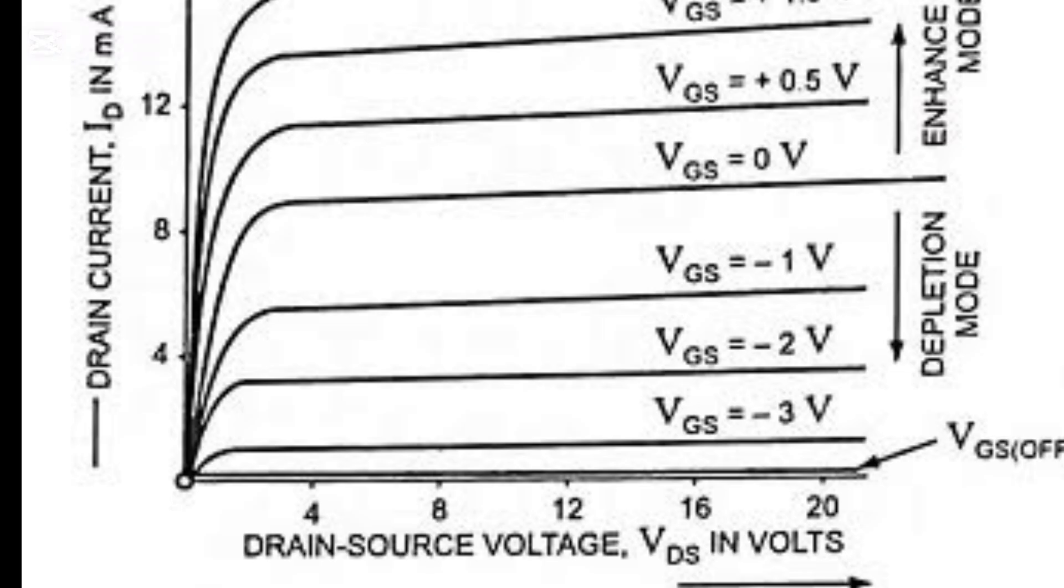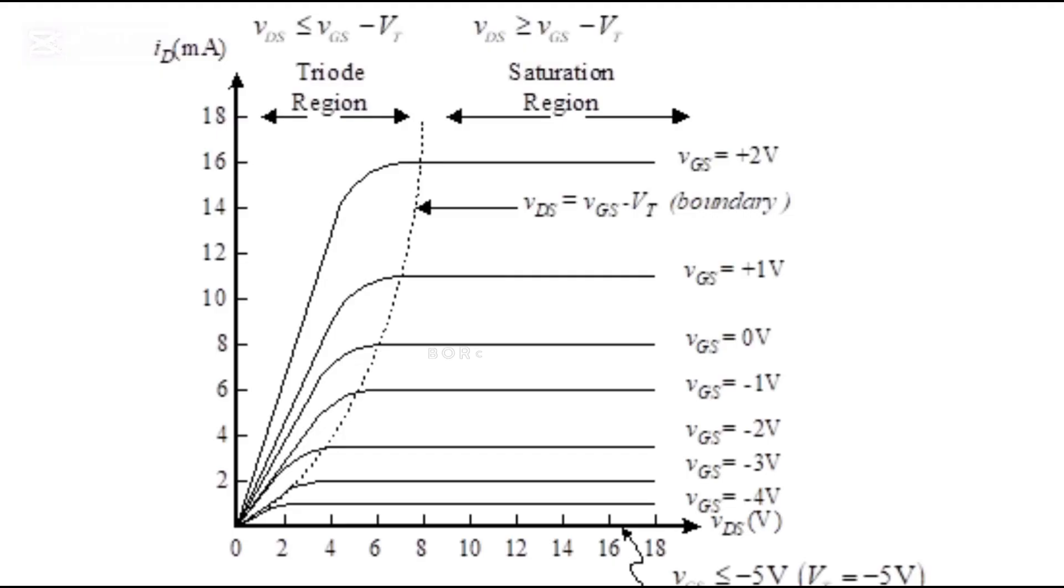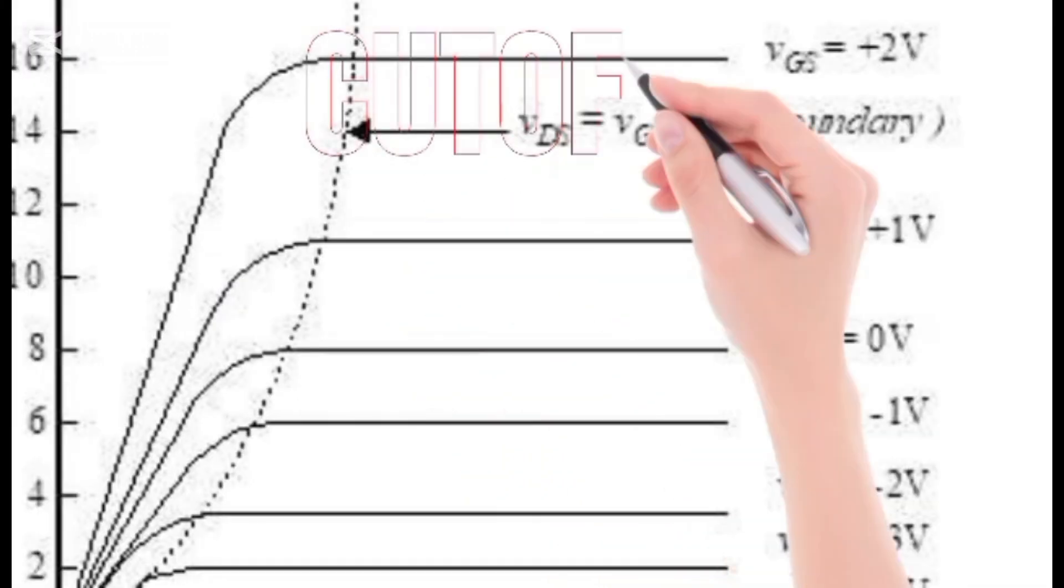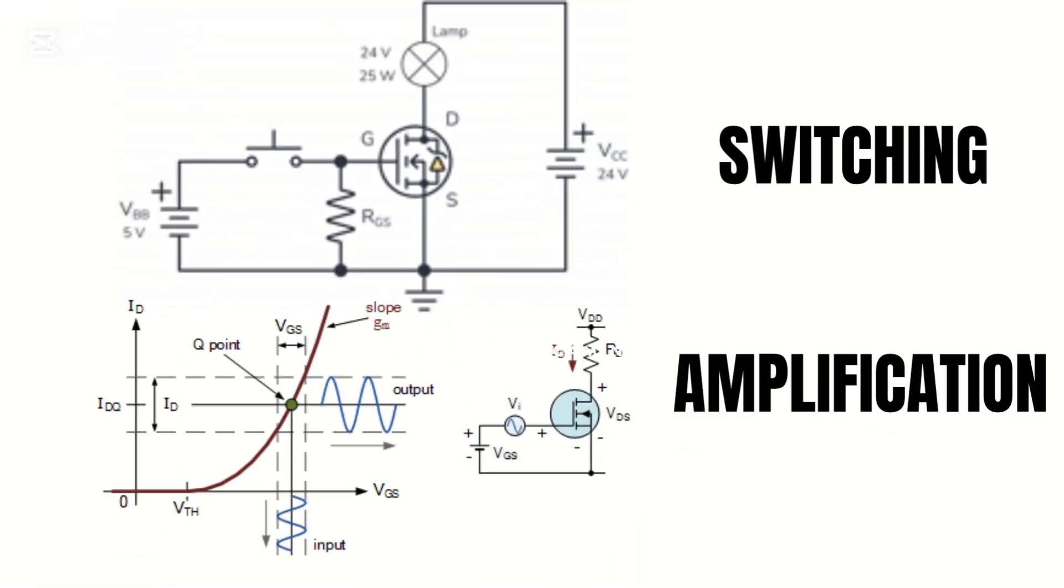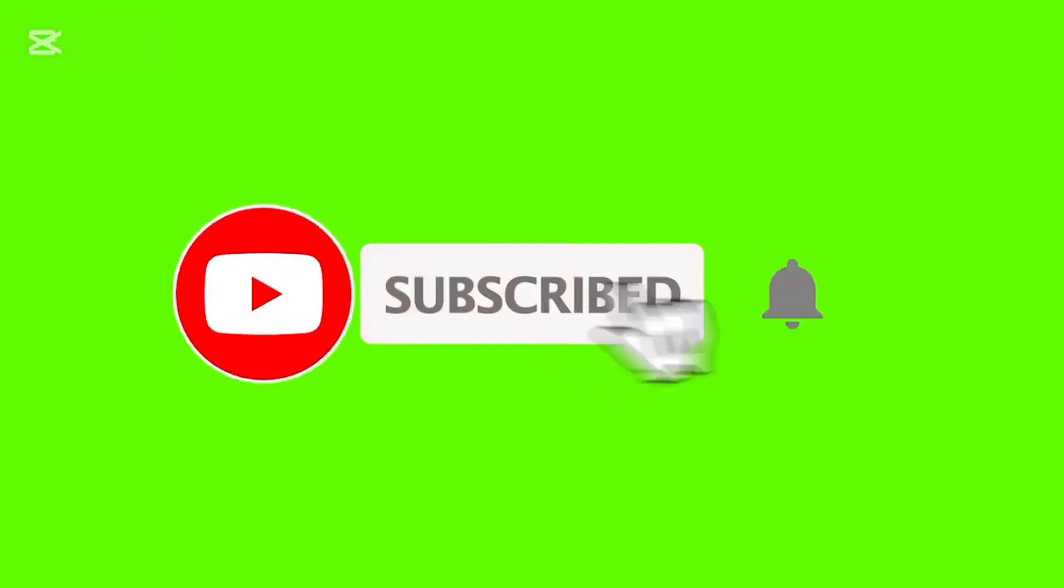That's the beauty of MOSFET IV characteristics. They show how the drain current, ID, varies with gate source voltage, VGS, and drain source voltage, VDS, helping to identify its operating regions: cutoff, linear, and saturation, for switching and amplification purposes. Don't forget to like, share, and subscribe for more electronics videos.